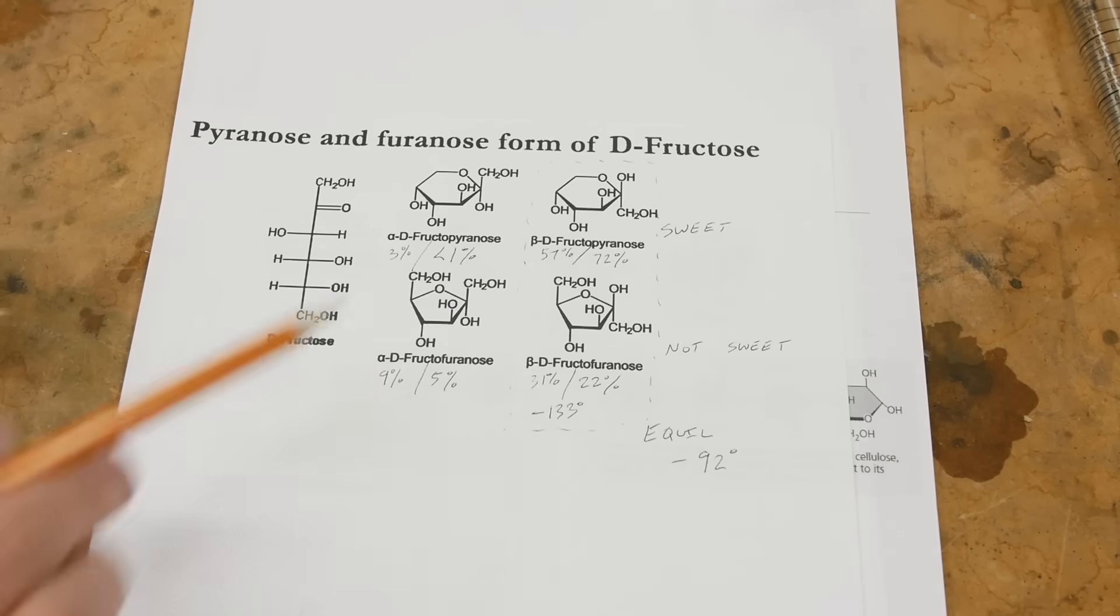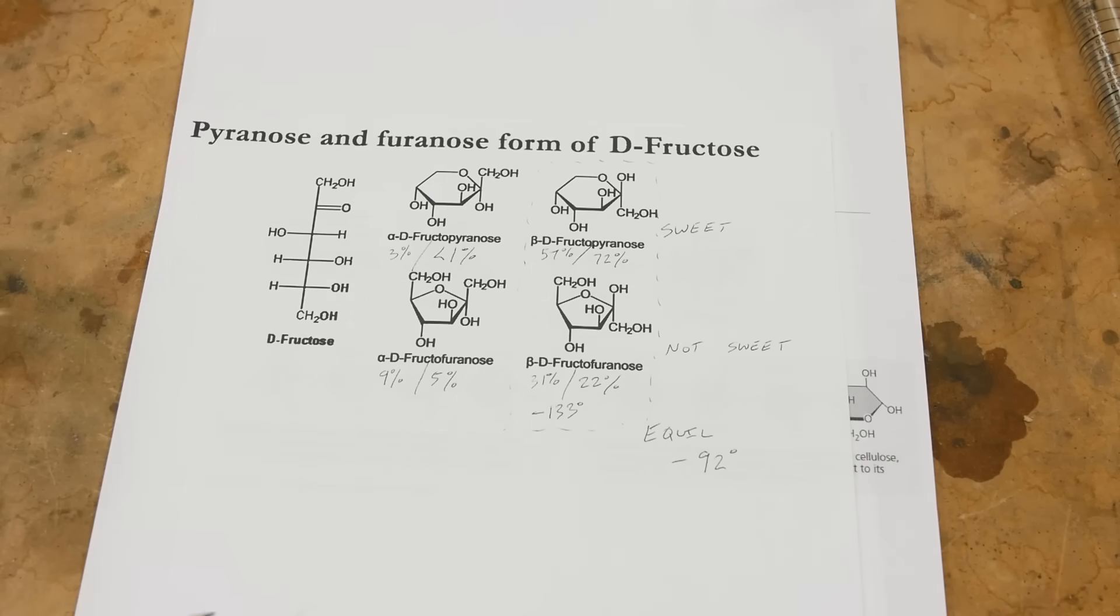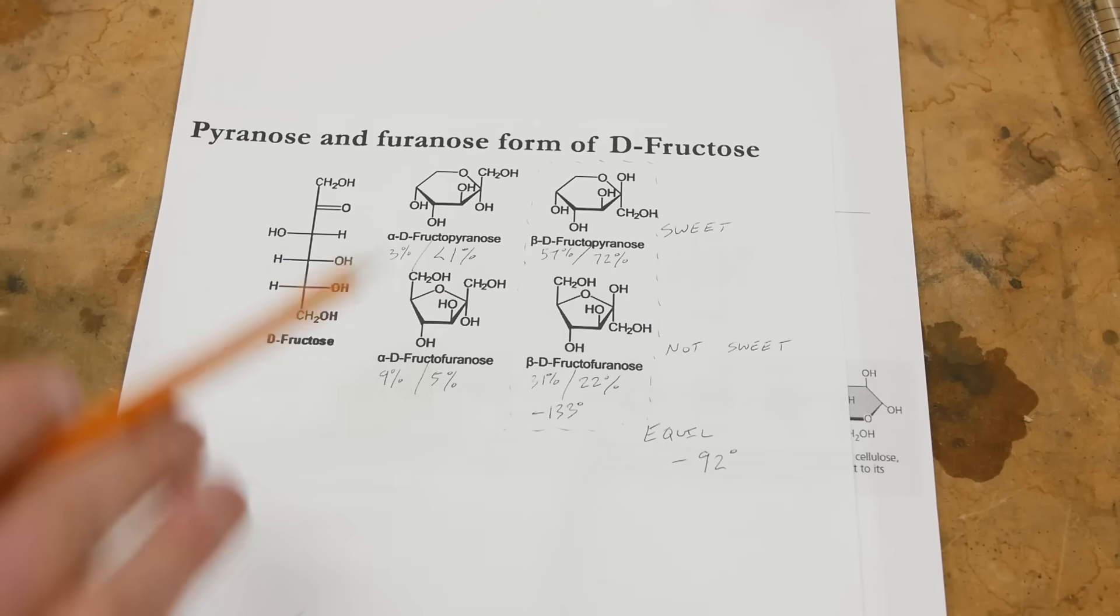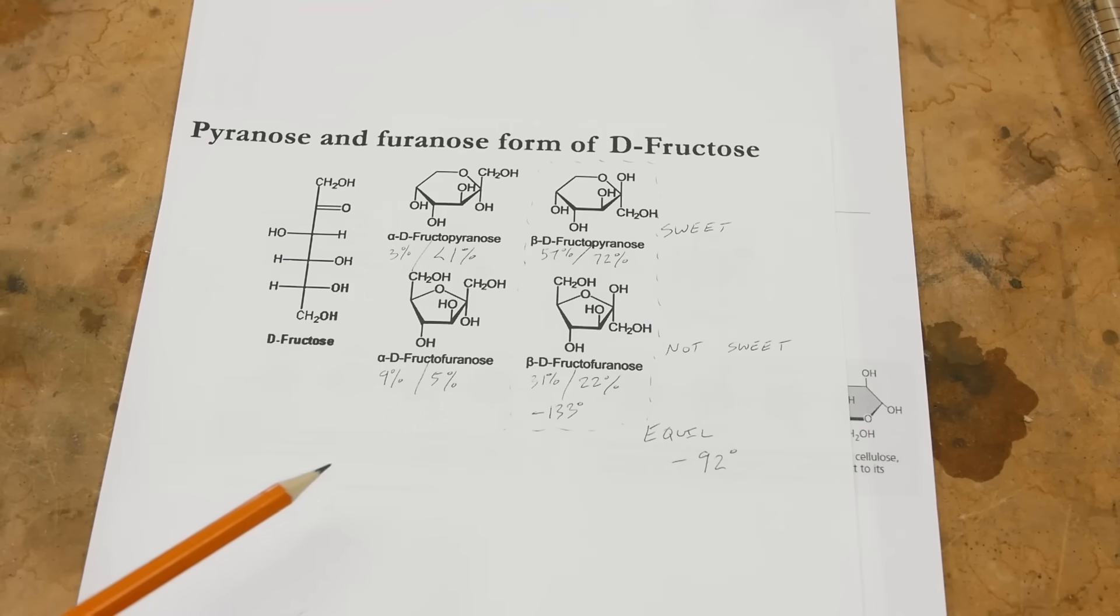And each one of these has different amounts of optical rotation and different sweetnesses. So in the case of fructose, if you change the temperature, you're changing the equilibrium between all of these different forms all at the same time. And this will have an effect on the overall sweetness.